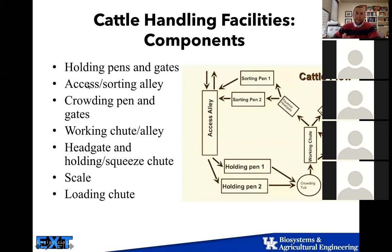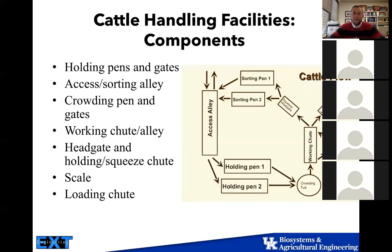Cattle handling facility components: we want a couple of holding pens or sorting pens, usually about 10 to 12 feet wide. Then our access and sorting alleys, also about 10 feet wide, working to our crowding pen and crowding tub, then running down to our chute alley — ideally about 20 feet long — going to our head gate and squeeze chute. We could also potentially have a scale or loadout chute. We ideally want some type of loadout system available.